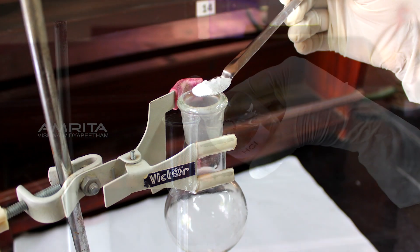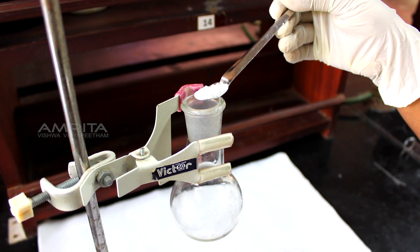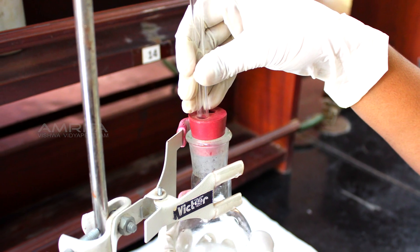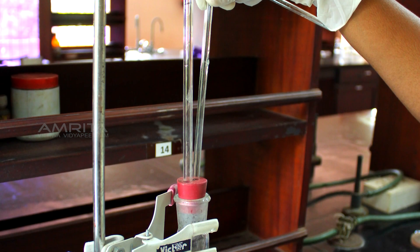Add HCl to sodium carbonate only after making the apparatus airtight, otherwise the gas evolved in the reaction will escape through the gap. Handle the chemicals HCl and NaOH carefully as they are harmful.